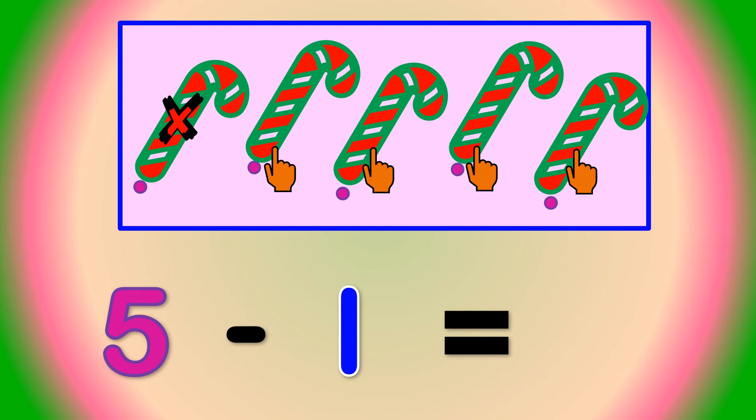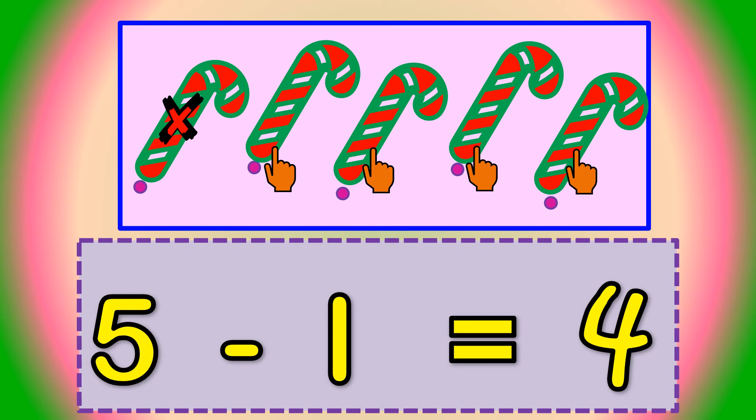Second, count the candy canes with an X mark: 1. That is the subtrahend. We write minus 1. Finally, count how many candy canes haven't been crossed out: 1, 2, 3, 4. 4 candy canes. That is the answer. We write equals 4. We have written 5 minus 1 equals 4.